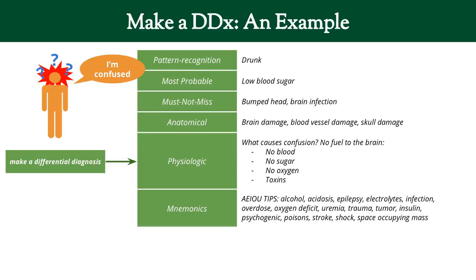Anatomically, what makes someone confused? What's inside the head? There's obviously brain, the blood vessels that feed the brain, and the skull. Physiologically: what causes confusion? The brain isn't getting enough fuel. Why? Maybe blood isn't flowing to the brain, or blood is flowing but has no sugar or oxygen in it — two fuels the brain needs. Or maybe toxins are poisoning the brain. For mnemonics, there's AEIOU-TIPS: Alcohol, Acidosis, Epilepsy, Electrolytes, Infection, Overdose, Oxygen deficit, Uremia — and the TIPS portion covers additional causes. These remind you to think about each category.